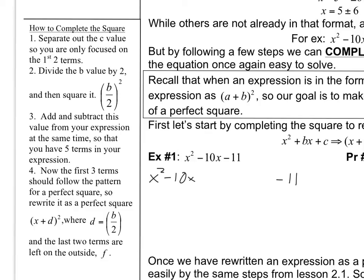Now we have to do a little side work. It says divide the b value — the b value is the one in the middle — by 2 and then square it. So: negative 10 is my b value, divide it by 2, then square it. Negative 10 divided by 2 is negative 5, and negative 5 squared is 25. So in step 2, the value that I got is 25.